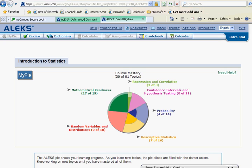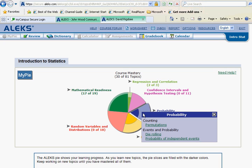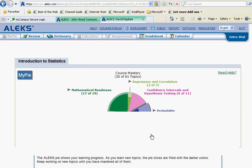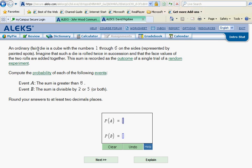Okay, we will be now working the blue probability slice and looking at die rolling. It says an ordinary fair die is a cube with the numbers 1 through 6 on the sides represented by painted spots.